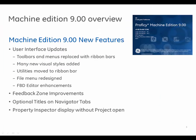Machine Edition 9.0 has several new features including User Interface updates, where toolbars and menus are replaced with ribbon bars. Many new visual styles have been added. Utilities are moved to the ribbon bar. The file menu has been redesigned. There are several FBD editor enhancements, feedback zone improvements, optional titles on Navigator tabs, and the ability for the property inspector to be displayed without any project being open.